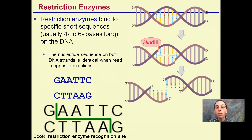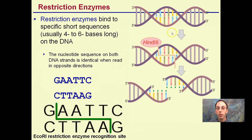There are different restriction enzymes, and they basically look for different recognition sites where they're going to cut the DNA. For example, we have our HINDI-3 restriction enzyme cutting it right here, resulting in two sections of DNA.